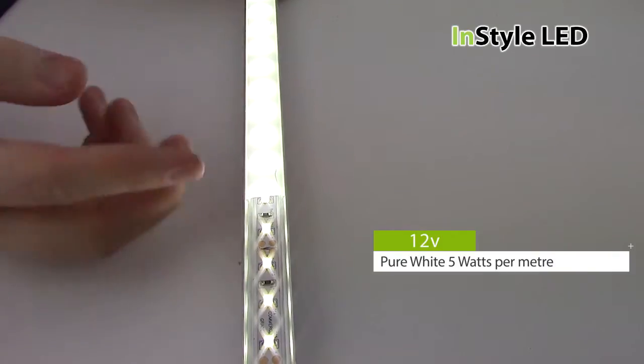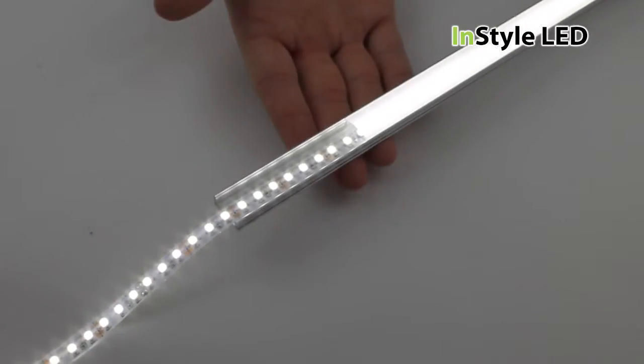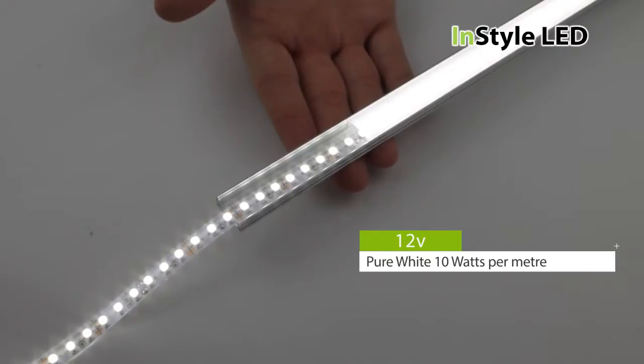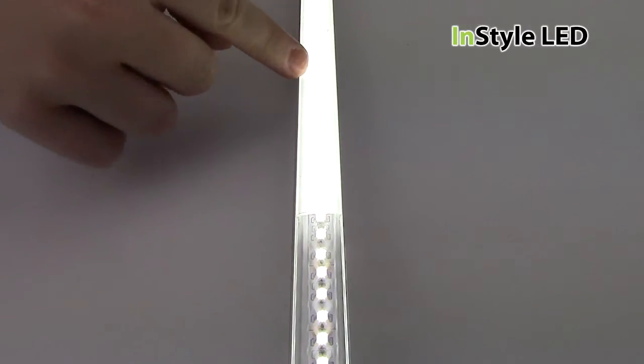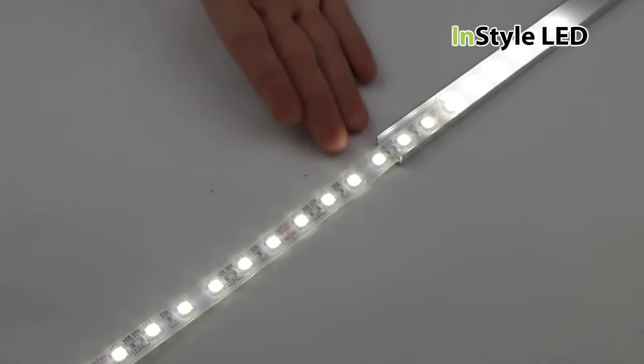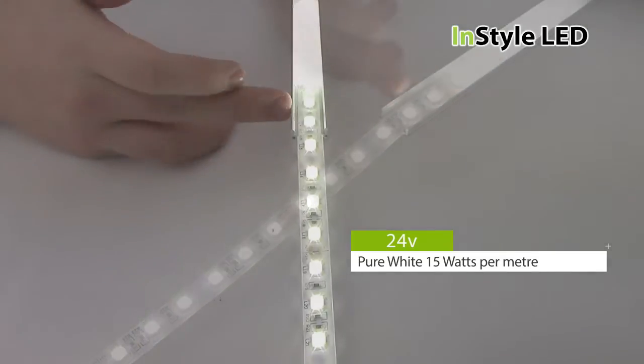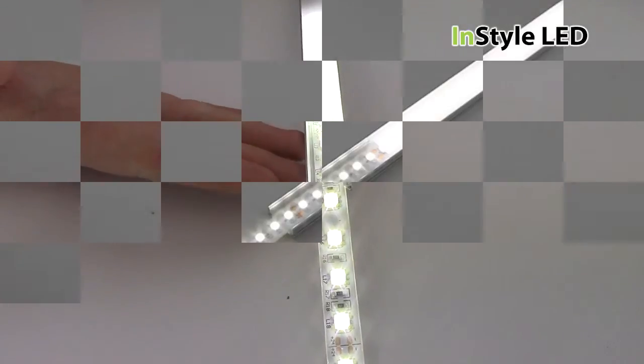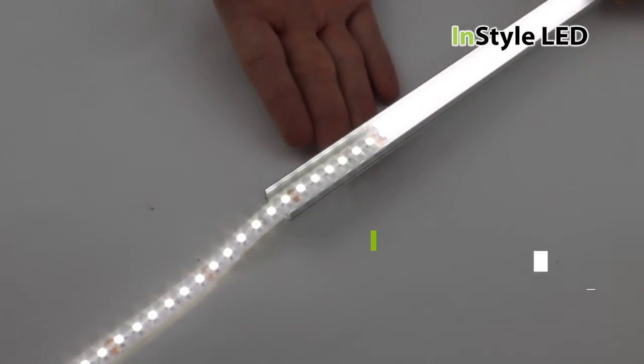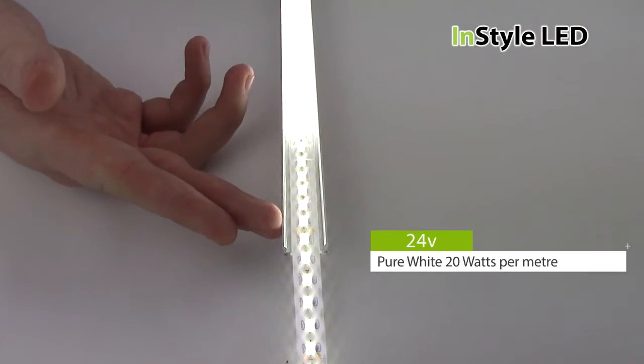Here is the actual effect of what each of our LED tapes look like in the extrusion. The extrusion has a diffused cover to disperse the light when looked at. The effect varies from tape to tape due to the density of LEDs per metre. See you next time.